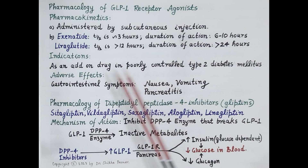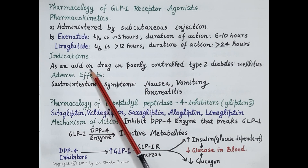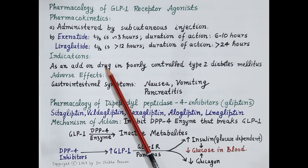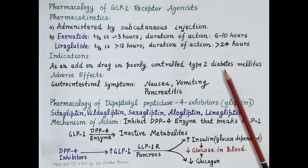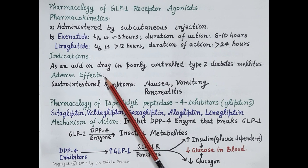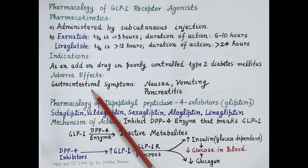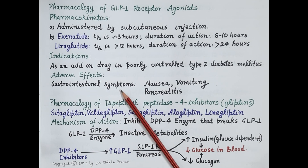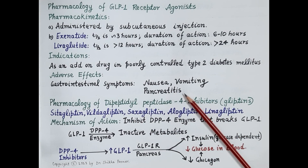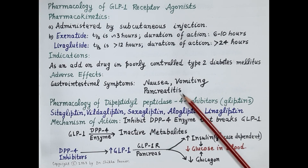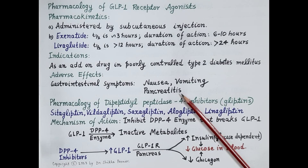Indications: GLP-1 receptor agonists are used as add-on drugs in combination with other anti-diabetic drugs like metformin and sulfonylureas for the management of poorly controlled type 2 diabetes mellitus. Adverse effects: these drugs produce mainly gastrointestinal side effects like nausea and vomiting, and are also known to cause increased risk of pancreatitis. These drugs are contraindicated in patients with pre-existing gastrointestinal motility disorders.